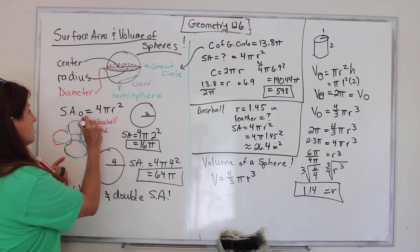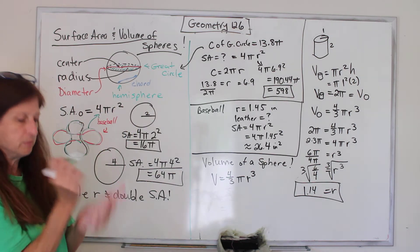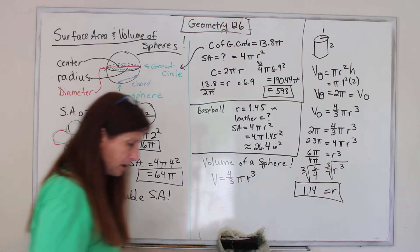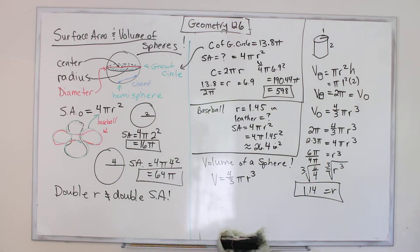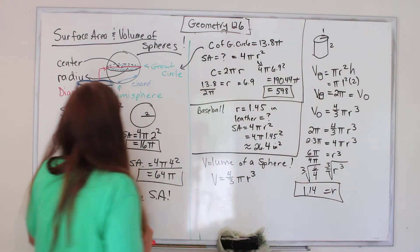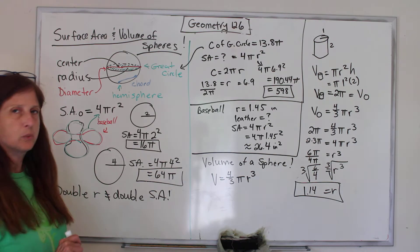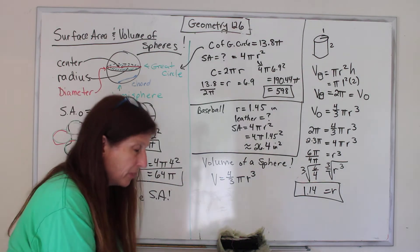You can kind of see that there are four circles that make up what covers a ball, like a baseball, and that's where that four comes in. One circle is πr², but we have four of them, so you can think about that's where that four comes from in the formula.